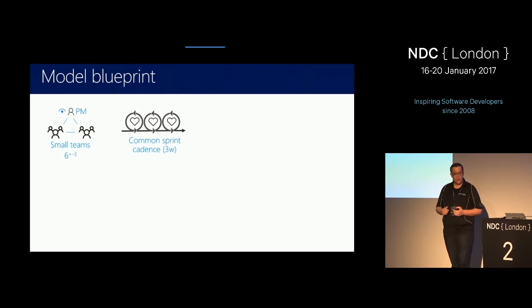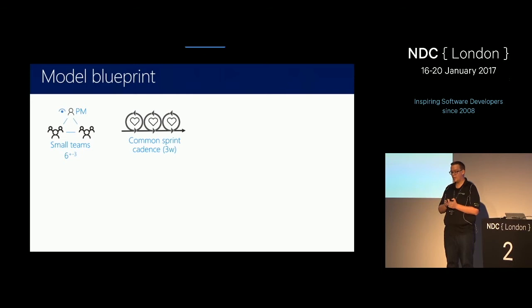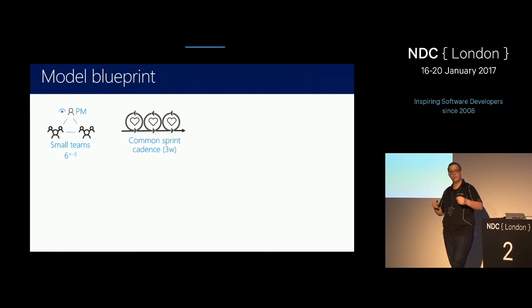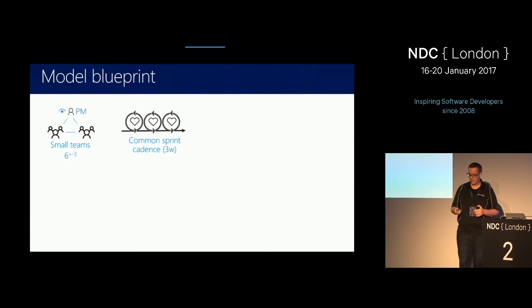We have a common sprint cadence. We follow a Scrum process, and we have the same sprint cadence as Microsoft — sprints of three weeks. We start our sprint when they start, we end our sprint when they end, and this helps communication. So maybe when you're in a larger company working on multiple products, aligning your sprints really helps with communication. You'll see that if someone says it'll be done in sprint 120, then you know what they mean without having to ask how long their sprints are.